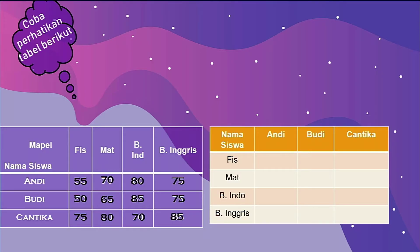Berikutnya, perhatikan tabel berikutnya — sama dari tabel yang di awal. Ada nama mapelnya dan nama siswanya: ada fisika, matematika, bahasa Indonesia, bahasa Inggris, ada Andi, Budi, Cantika.